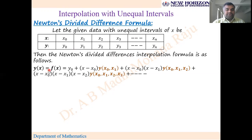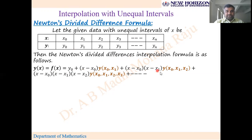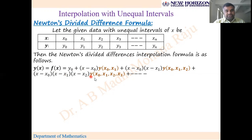Then Newton's divided difference interpolation formula is as follows: y(x) = f(x) = y₀ + (x − x₀)·[x₀, x₁] + (x − x₀)(x − x₁)·[x₀, x₁, x₂] + (x − x₀)(x − x₁)(x − x₂)·[x₀, x₁, x₂, x₃] + and so on.